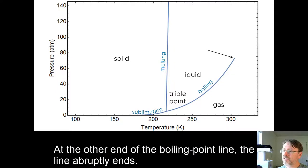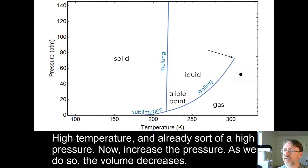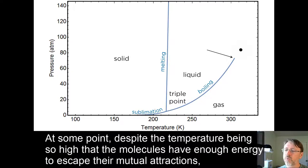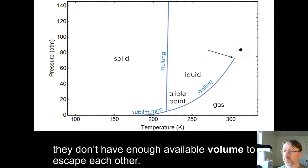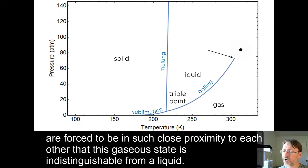At the other end of the boiling point line, the line abruptly ends. To understand what is going on here, imagine a sample in the gas phase right about here. High temperature and already sort of a high pressure. Now, increase the pressure even further. As we do so, the volume decreases. The molecules are pushed closer and closer together. At some point, despite the temperature being so high that the molecules have enough energy to escape their mutual attractions, they don't have enough available volume to escape each other. Eventually, the molecules, due to the excessive external pressure, are forced to be in such close proximity to each other that this gaseous state is indistinguishable from a liquid.